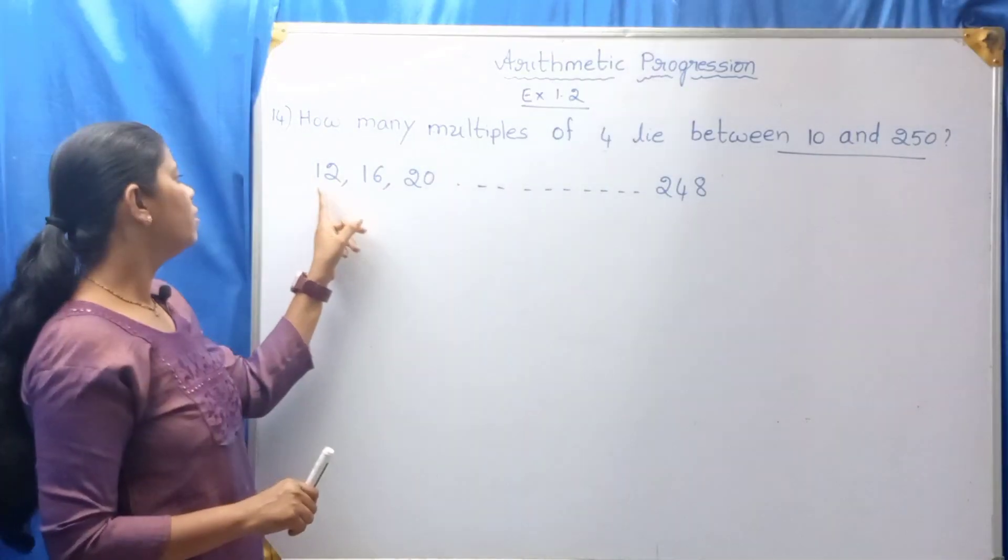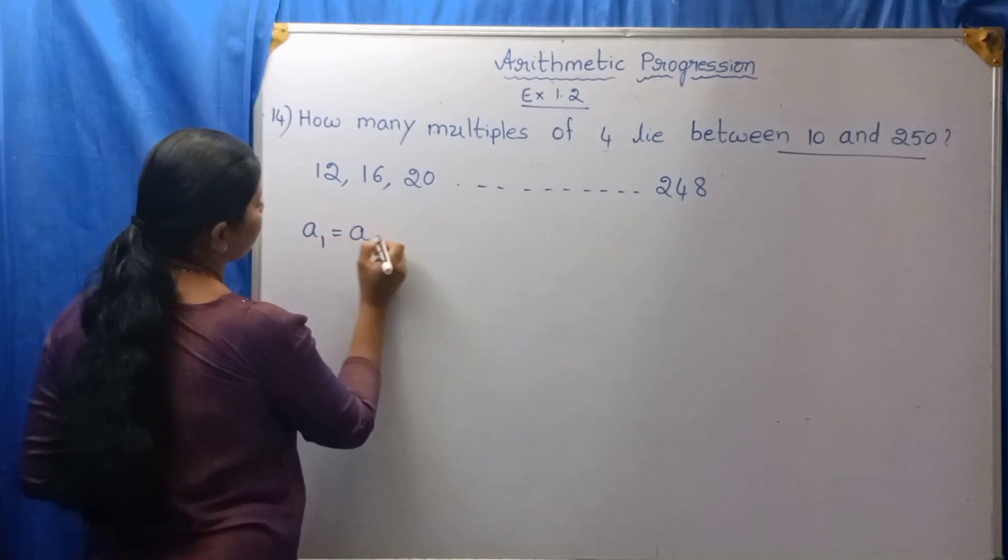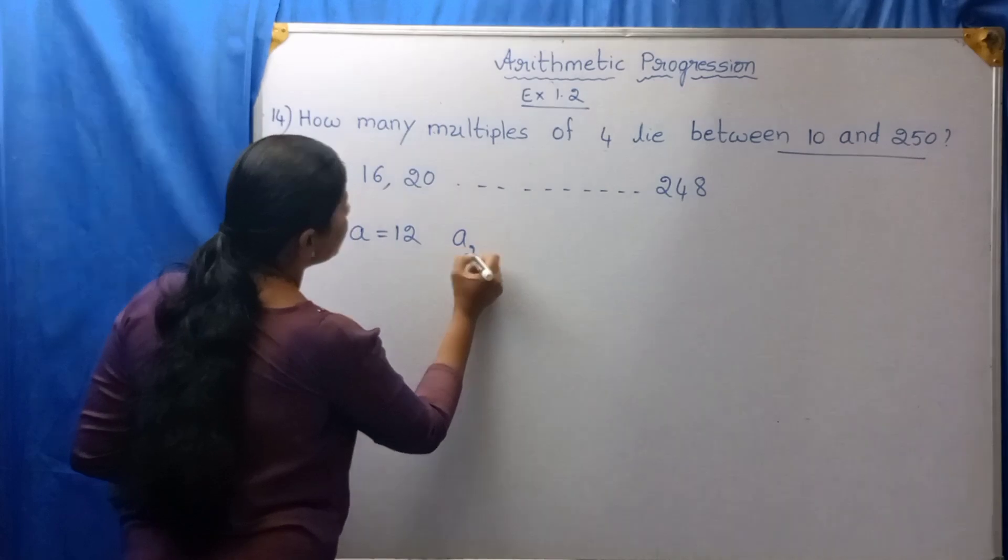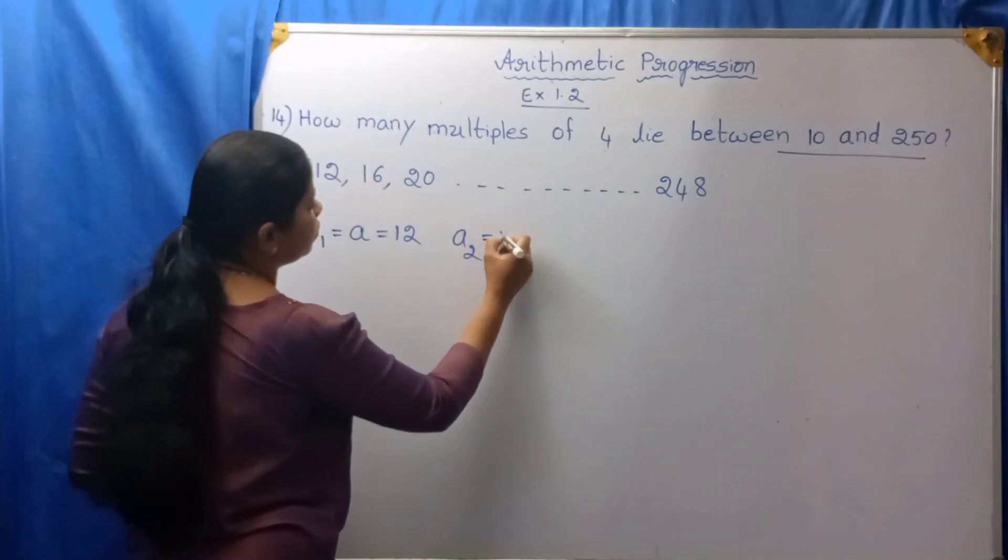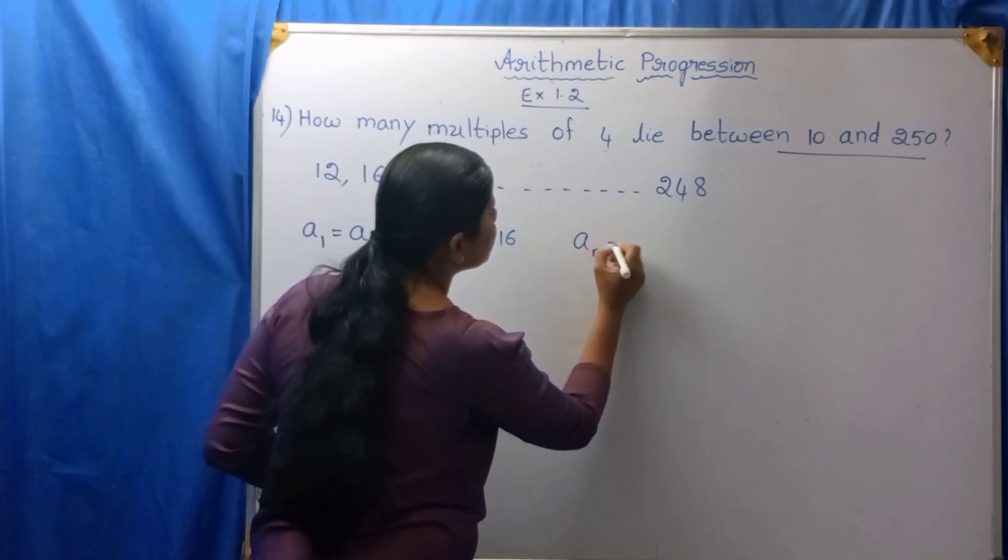In the place of A₁, we have 12. A₁ is nothing but A, is equal to 12. Then A₂ is 16. Aₙ is what? 248.